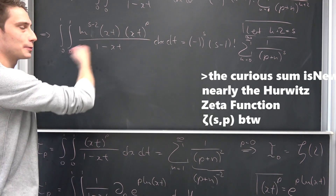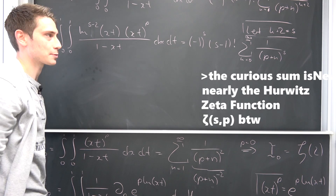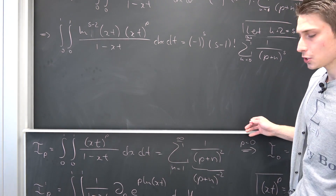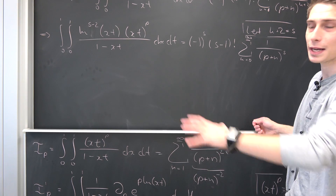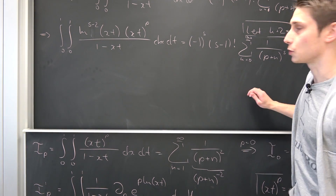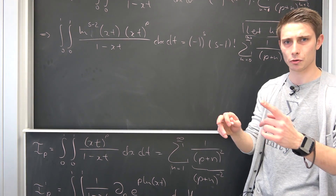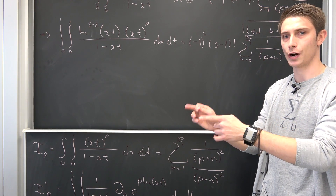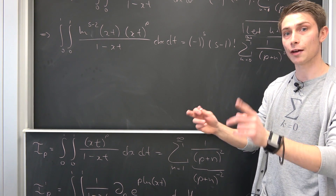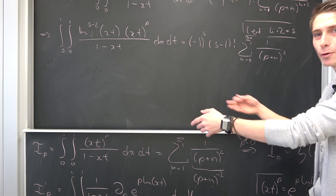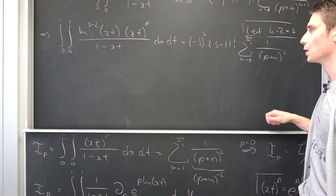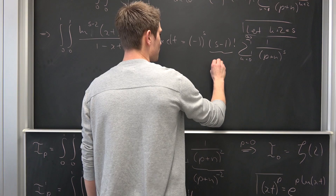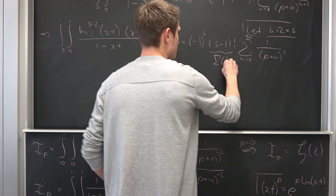One thing to make this look even cooler: (s minus 1) factorial is actually nothing but the gamma function of s. I've derived the gamma function with the same tools before — check that video. So (s minus 1) factorial equals gamma of s.